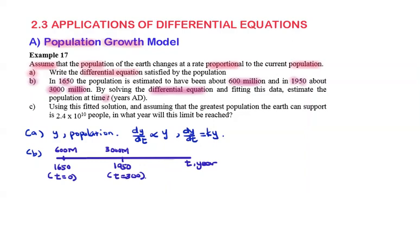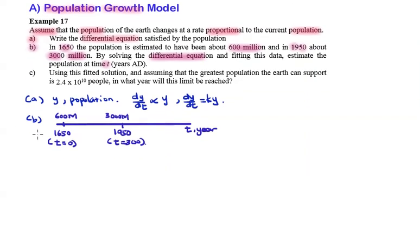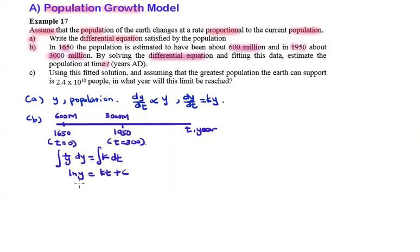We are going to use this information to solve the differential equation. First of all, we separate the variables. We group 1/y and dy on the left-hand side, equal to k dt. Integrating, ln(y) equals kt plus c. By taking the natural exponential, y equals e raised to the power kt plus c, which equals e^(kt) times e^c.